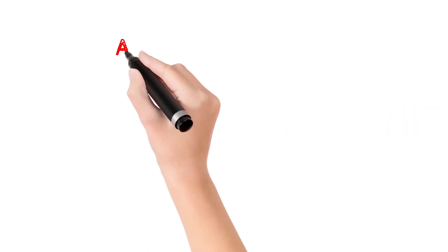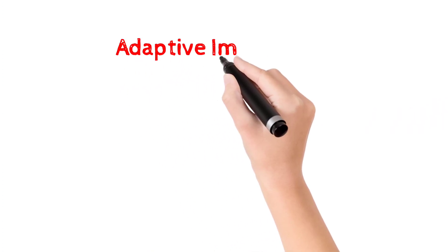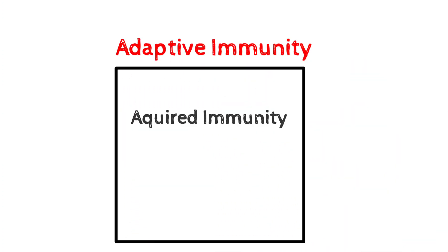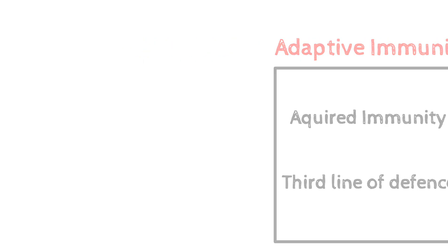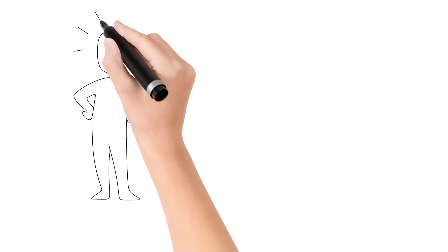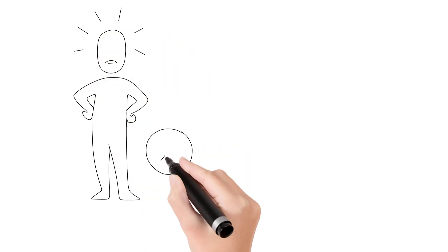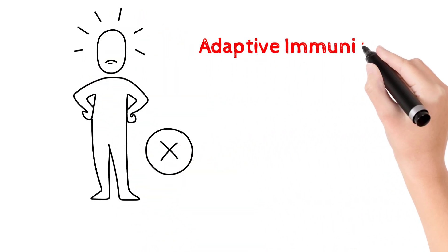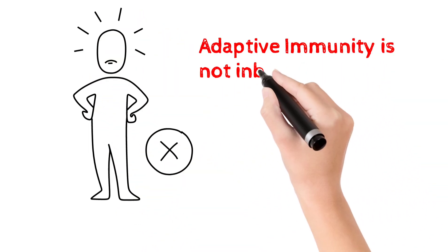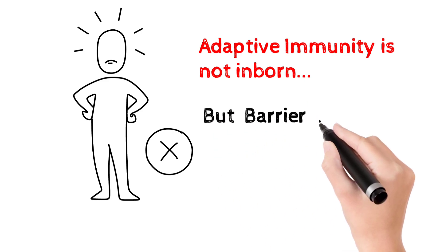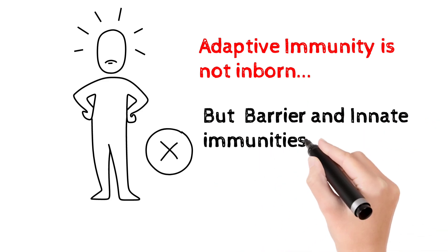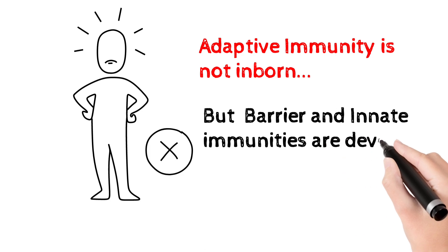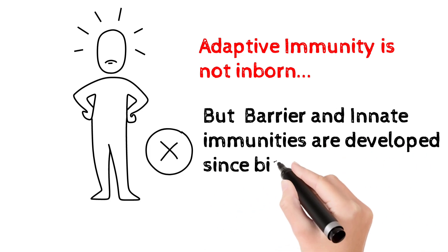Today we are going to talk about adaptive immunity. We have acquired immunity in our third line of defense. Adaptive immunity is not inborn. We have developed adaptive immunity in our body. When compared to other types of systems like innate and barrier, they are inborn. That means adaptive immunity is developed in our body.